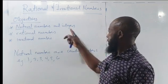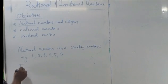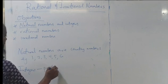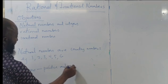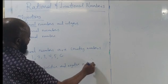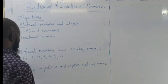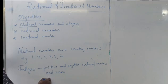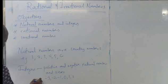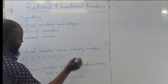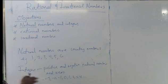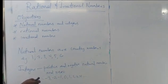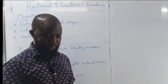Integers are both positive and negative natural numbers, and zero. So examples are: minus 3, minus 2, minus 1, zero, one, two, three, four, and so on and so forth — we still have numbers before and after these. So these are integers. Integers can also be referred to as whole numbers.